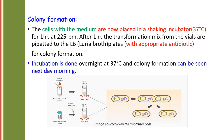The next step is colony formation. The cells with the medium are placed in a shaking incubator for about 1 hour at 37 degrees centigrade. After 1 hour, the transformation mixture is transferred from the vials to LB agar plates with appropriate antibiotic for colony formation. For example, if the plasmid confers resistance against ampicillin, then we should use ampicillin in the plates. Or if it confers resistance against tetracycline or kanamycin, then we use that antibiotic. Incubation is done overnight at 37 degrees centigrade and colony formation can be seen the next morning.